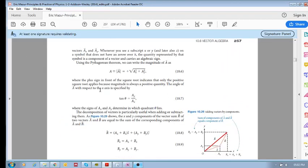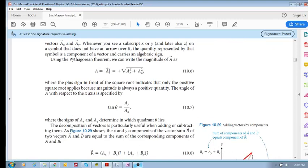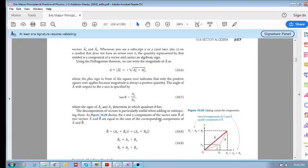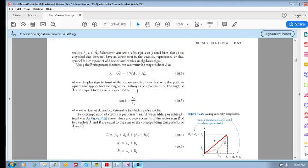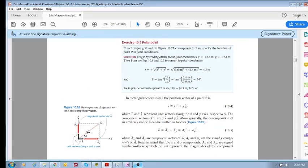If you want the magnitude of your vector, it's the positive square root of Ax squared plus Ay squared. If you want the angle, then theta is tan to the minus one of Ay divided by Ax.